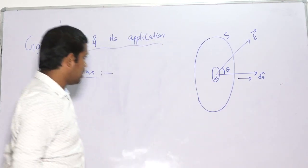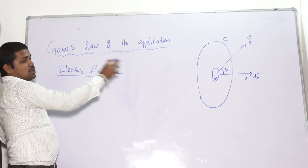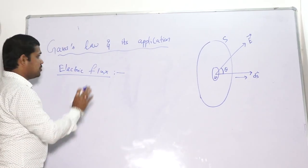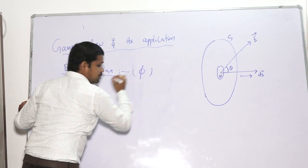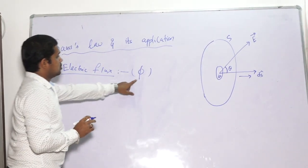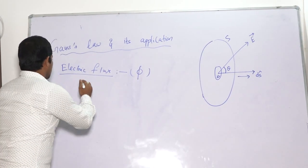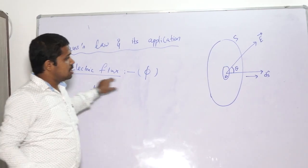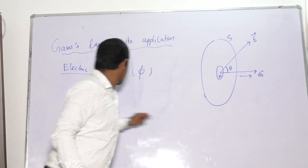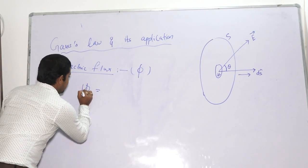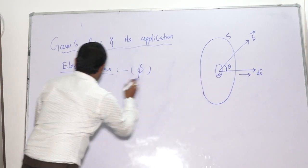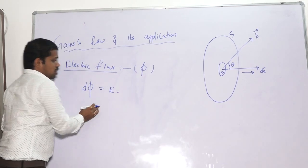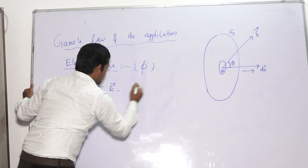The angle between E and dS is theta. Our aim is now to find out the number of electric field lines passing through this small area dS. I will denote this electric flux as phi. So before finding out phi, since it is a small area dS I will denote the small flux element as dPhi. So dPhi is nothing but the dot product between the electric field intensity E and the area vector dS.